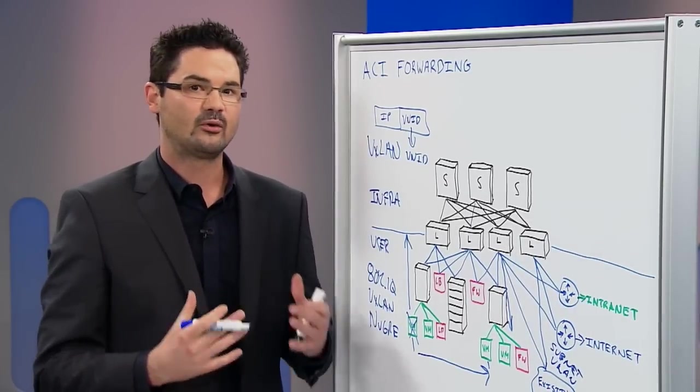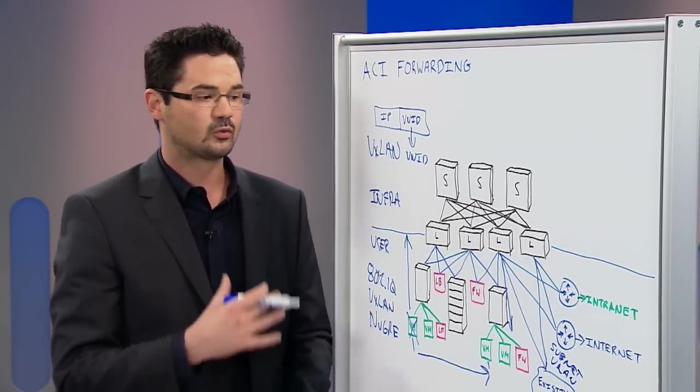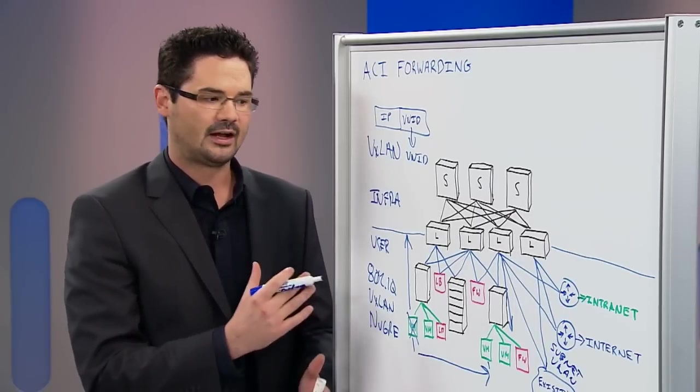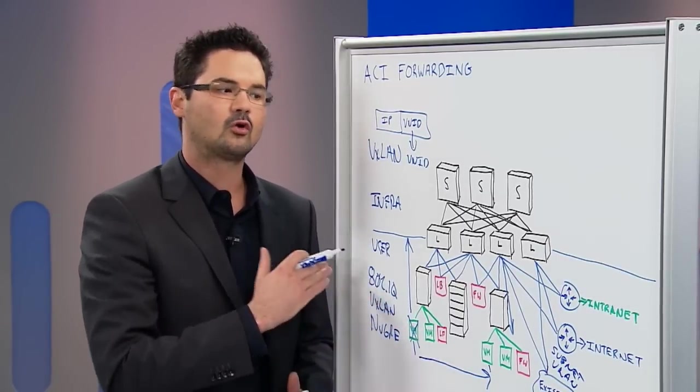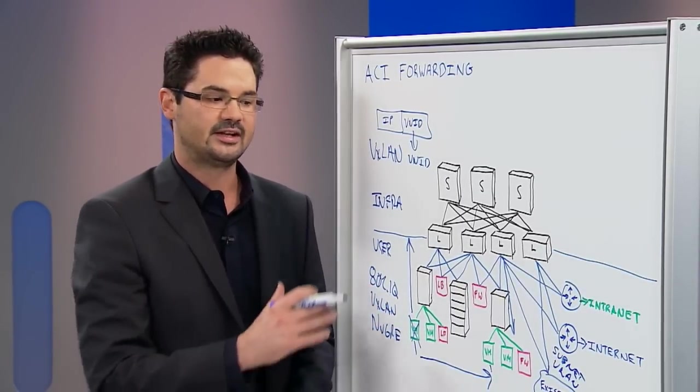So this gives us a very robust fabric, extremely scalable, and allows us to handle normalization of forwarding from our user space across the infrastructure space to any given endpoint.